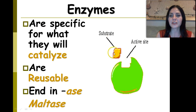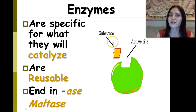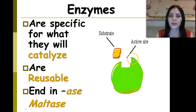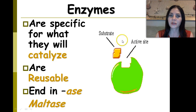For an enzyme, we have a substrate. This is not part of the enzyme as of yet. The substrate is what needs to be catalyzed, either broken down or put together. The enzyme itself has an active site, which is where the substrate will bind to eventually.